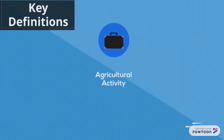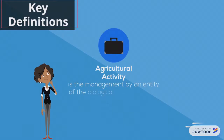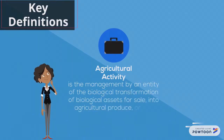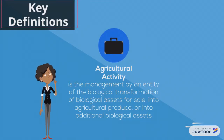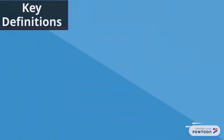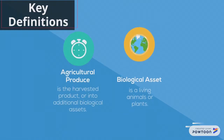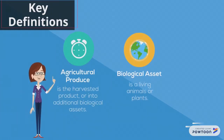Key definitions of PAS 41: Agricultural activity is the management by an entity of the biological transformation of biological assets for sale into agricultural produce or into additional biological assets. Agricultural produce is the harvested product of the entity's biological assets.